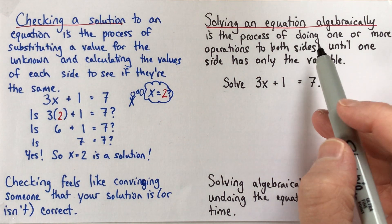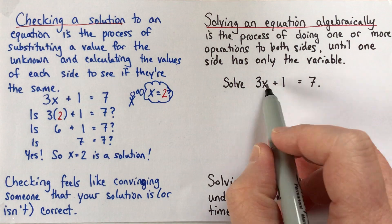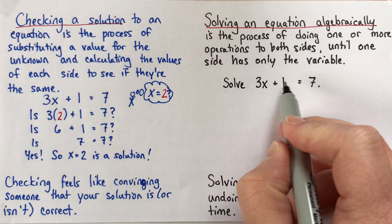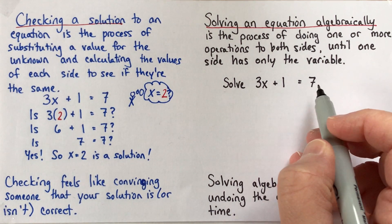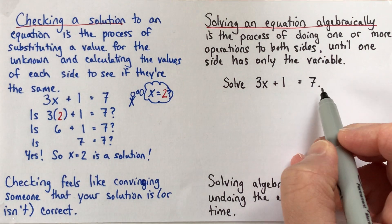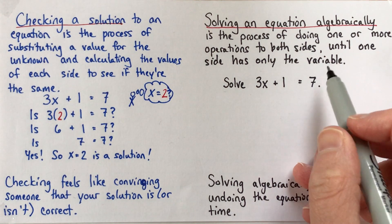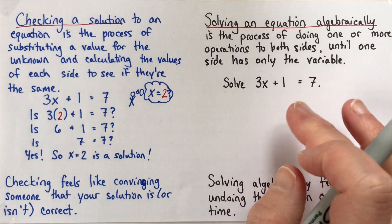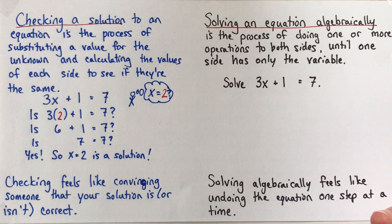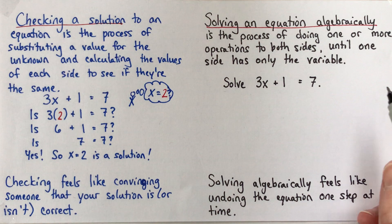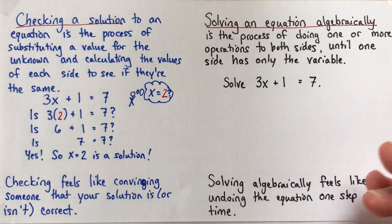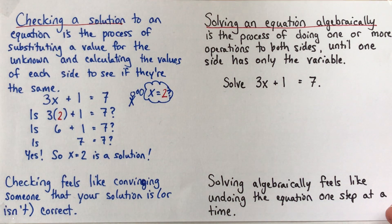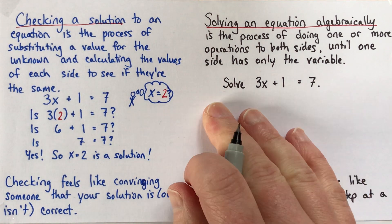Solving algebraically is the process of doing operations to both sides. So you do the same operation to both sides. And sometimes there's one operation to do, and sometimes there are a lot of operations to do. And you keep going, doing operations to both sides, always the same thing on each side, until one of the sides has only the variable left. So one of the sides, in this case, is going to say, it'll say x equals a number, or whatever your variable is. Okay? So I'll show what this looks like here.